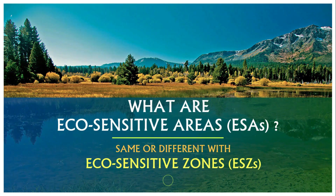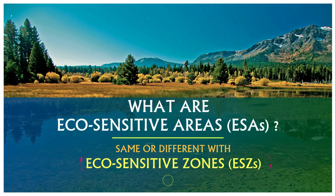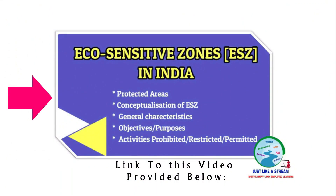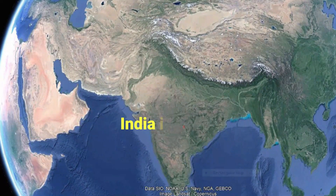Without doubt, one might think that its meaning is similar to eco-sensitive zone or ESZ. For your information, technically there are certain degrees of difference in meaning when we use the term eco-sensitive area and eco-sensitive zone, or ESA and ESZ. For better understanding of ESA, I recommend you to first be clear about ESZ. Therefore, if you are interested, the link to the eco-sensitive zone video is provided in the description below, or you can check my channel for the same.